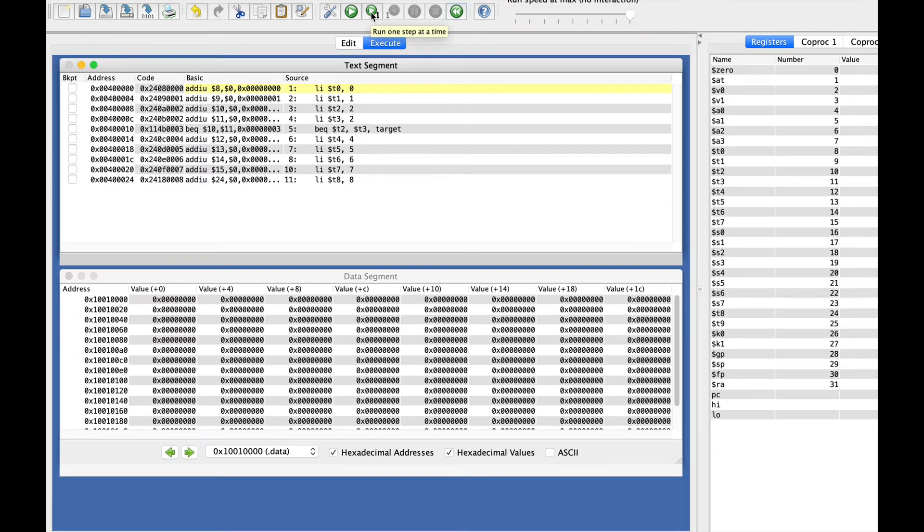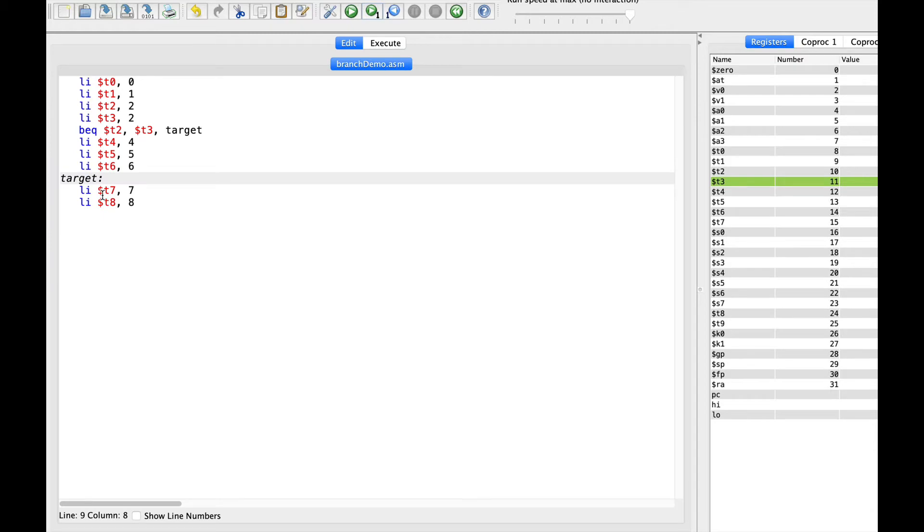So if we step through the code and we initialize T0, T1, T2, T3, and now we're at the branch instruction, you can see right here that T2 and T3 are both set to 2. So when I execute this branch instruction, control jumps down to the initialization of T7, which is where I put the label.